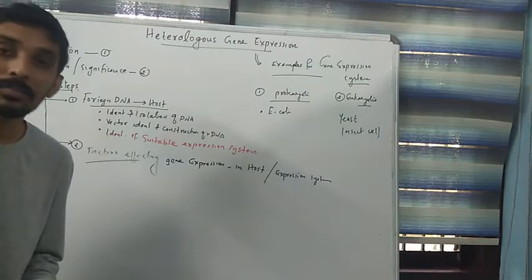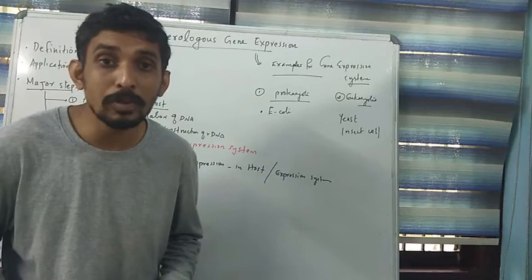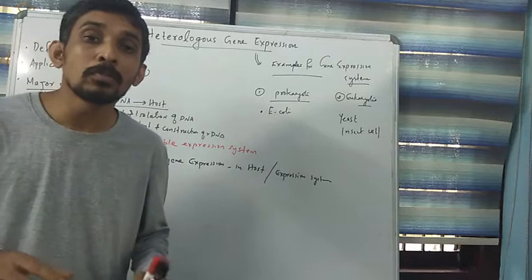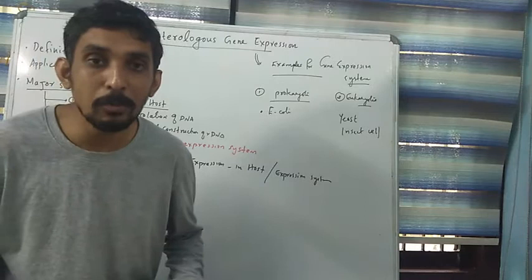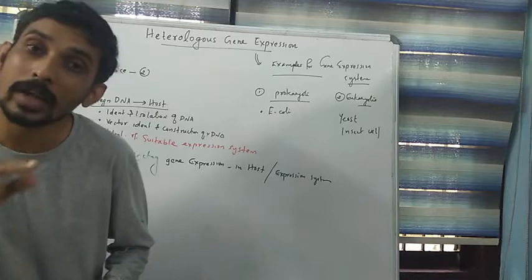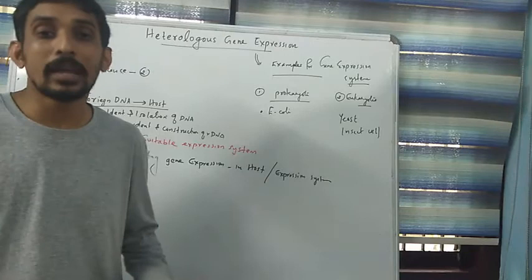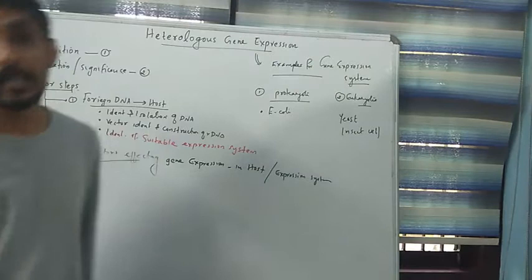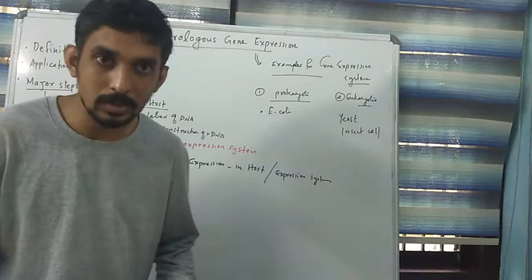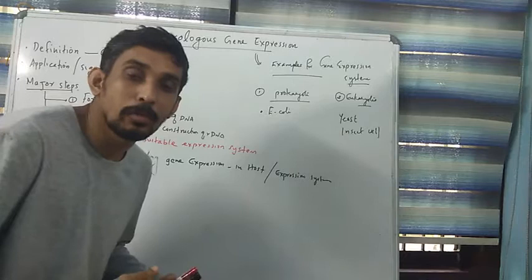A second aim: if we want to study post-translational modification of a prokaryotic protein — normally prokaryotic proteins never undergo post-translational modification — we can transfer a prokaryotic gene into a eukaryotic cell. The eukaryotic cell will then perform post-translational modification on that protein. In summary, we perform heterologous gene expression for research purposes, economic benefit, and producing various proteins and enzymes at commercial scale.